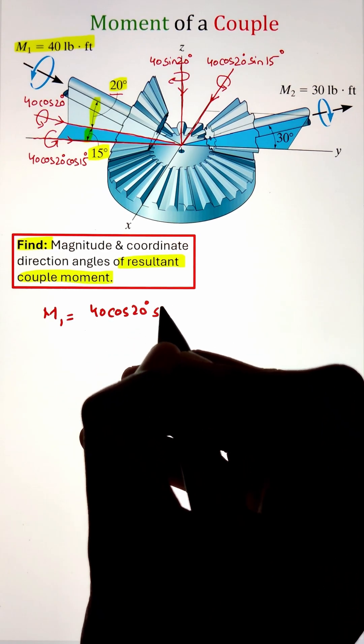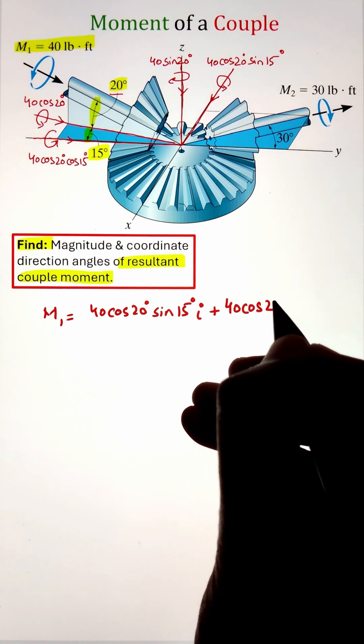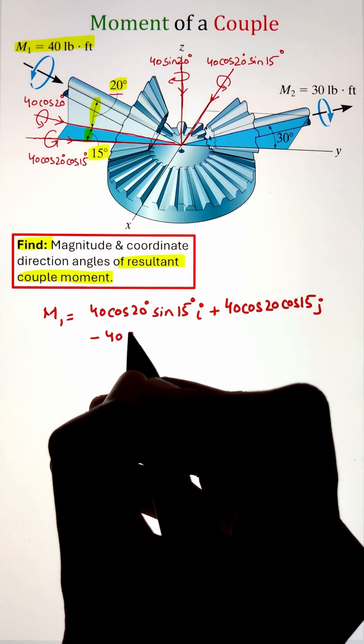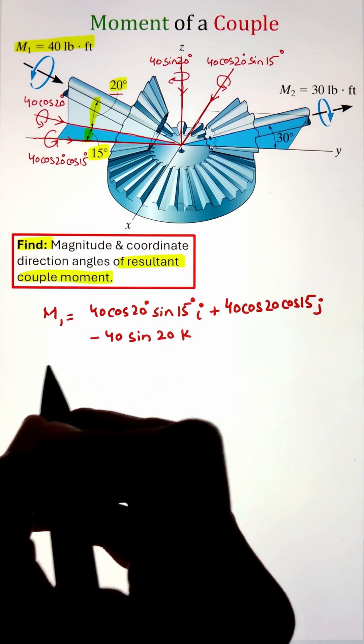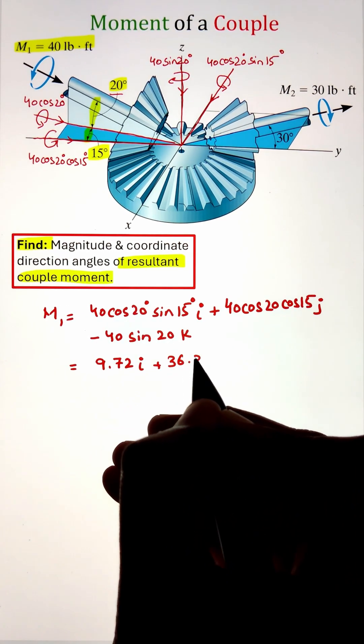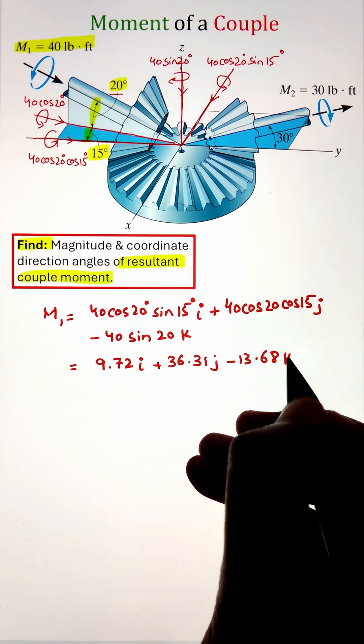Also, the rotation is happening in the clockwise direction. So by convention, counterclockwise is taken as positive and clockwise is taken as negative. Simplifying, we get the value of M1 as 9.72i plus 36.31j and negative 13.68k.